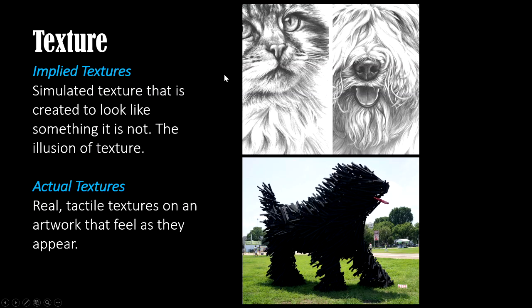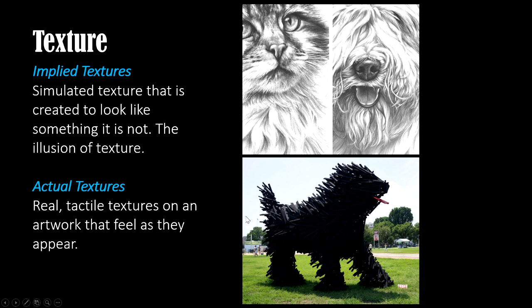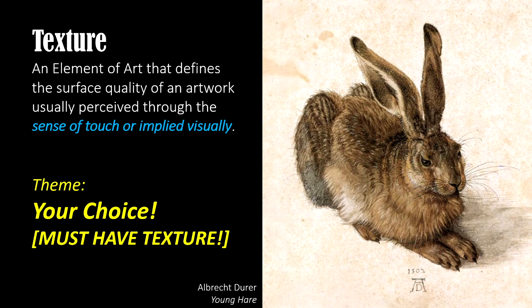Just to go over this idea again: implied textures are simulated — made to look like something that it's not. Like this cat and dog — this is not furry and fuzzy. It would just feel like a piece of paper, but it's meant to look like the illusion of texture. And then there's actual textures that are tactile. You can put your hands on it and it feels a certain way, like this giant shaggy dog made out of lots of pieces of wood. If you walked up to it and touched it, you could get a splinter because it's actual wood.